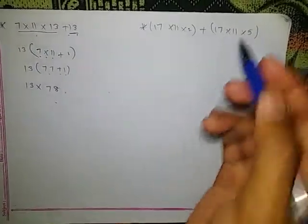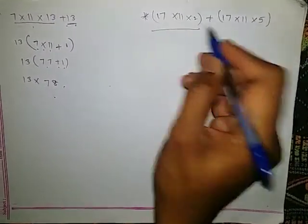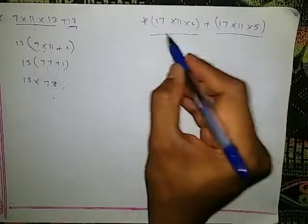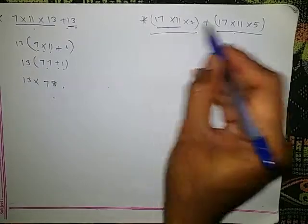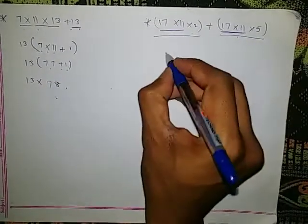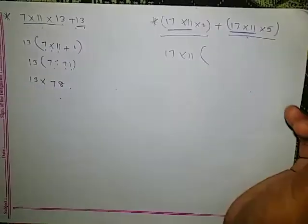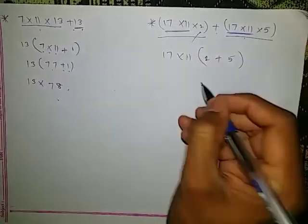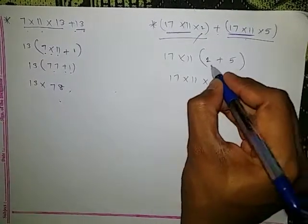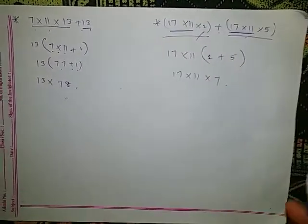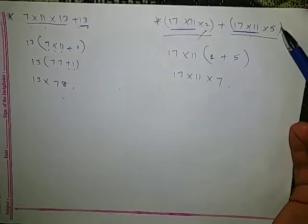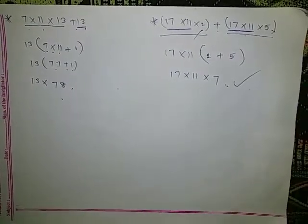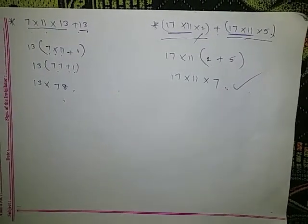Let's check one more. This total is one term and this total is another term. In these two terms, the common factor is 17 × 11. Taking 17 × 11 common, we remain with 2 + 5 = 7. So the expression equals 17 × 11 × 7. The given number can be written as a product of other numbers, so it is a composite number.